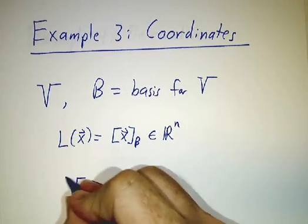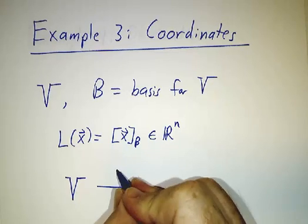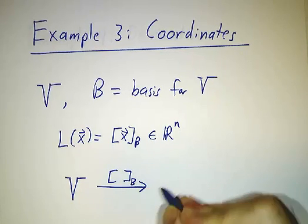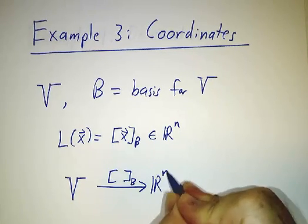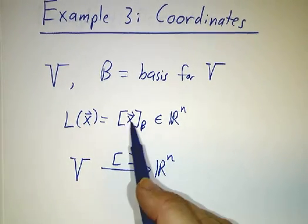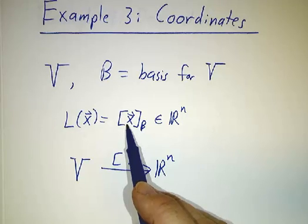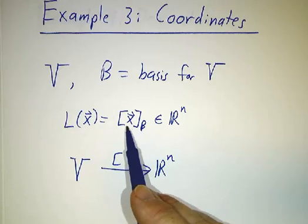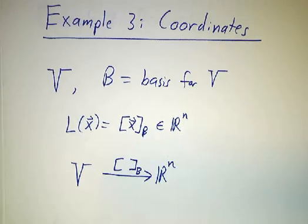So coordinates eat a vector in V and spit out a vector in R^n. So we say that the operation of taking coordinates in the B basis is a linear transformation from V to R^n. And we already checked that the coordinates of x plus y are the coordinates of x plus the coordinates of y. The coordinates of 3x are three times the coordinates of x.